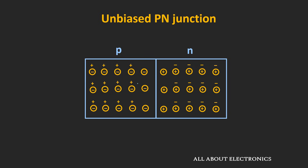Whenever the electron diffuses across the junction, it creates two ions. First, whenever it leaves the n-type region, it leaves behind a pentavalent atom which is just one electron short, so that atom becomes a positive ion. And whenever the electron enters the p-type region, it gets recombined with the hole of the trivalent atom, so after capturing the electron, the trivalent atom becomes a negative ion. Every time the electron diffuses to the p-side from the n-side, it creates one positive and one negative ion near the junction.